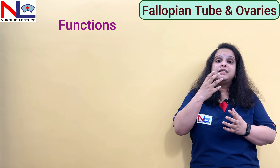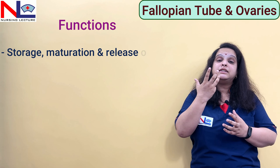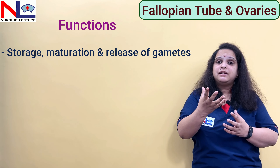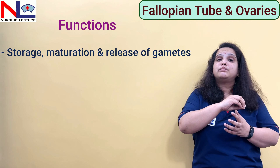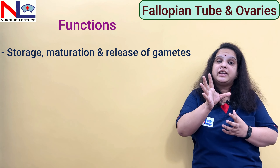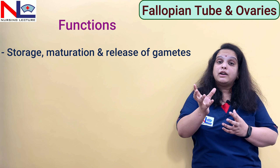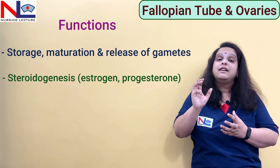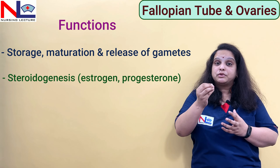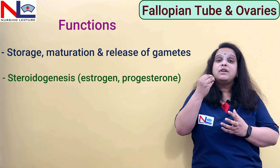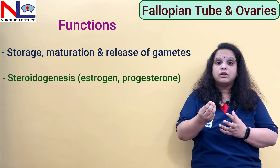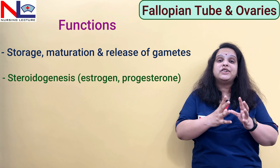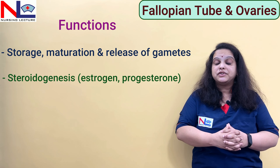The main functions of the ovary are to store and mature the follicles and to release the oocyte. It is the site for maturation and storage of various follicles. Through these follicles, certain steroid hormones are also produced, including estrogen and progesterone. So steroidogenesis, as well as storage and maturation of follicles, are the main functions of the paired ovaries.